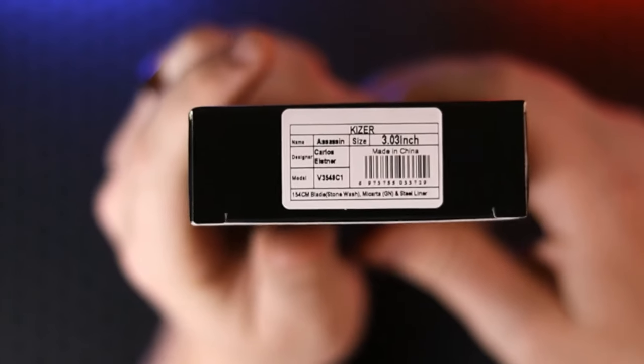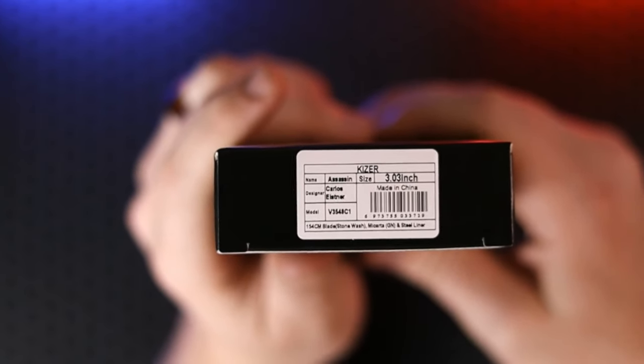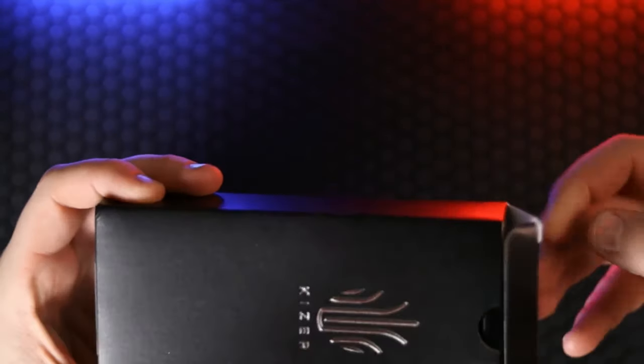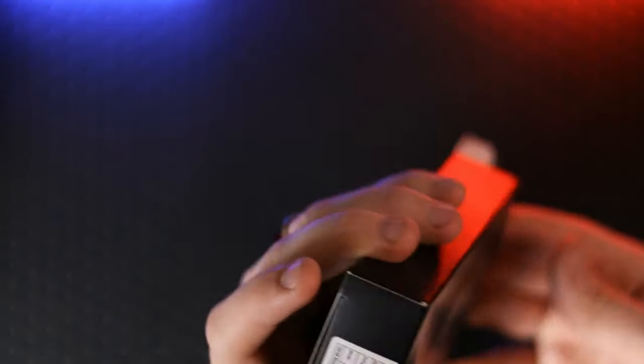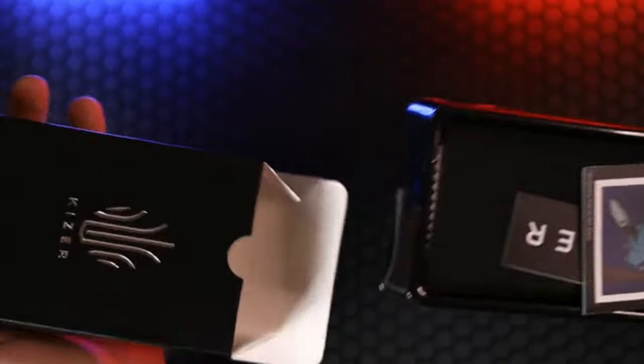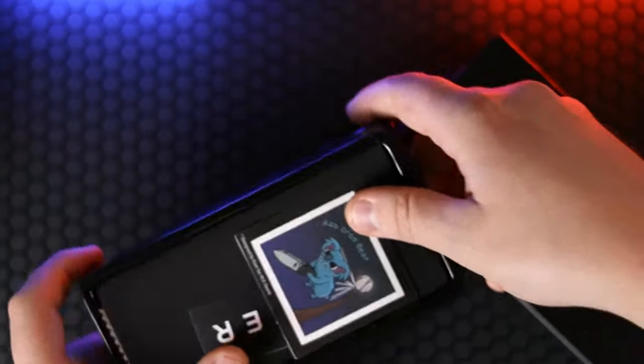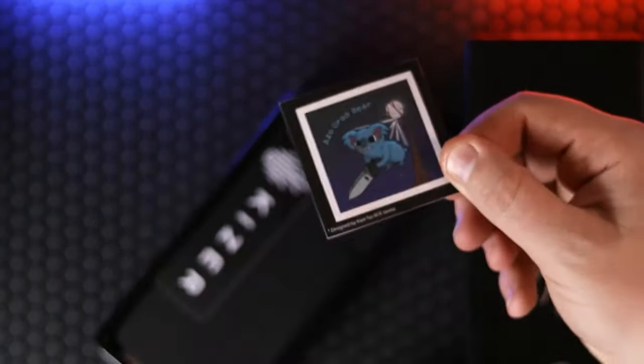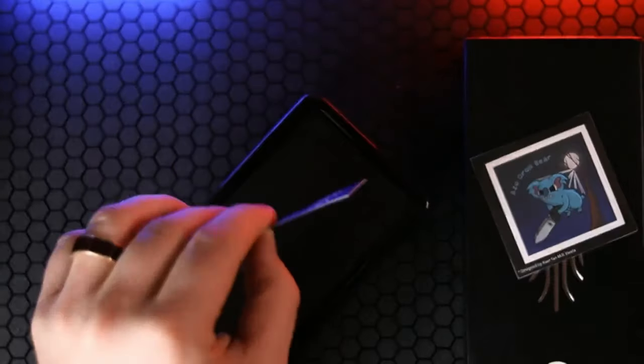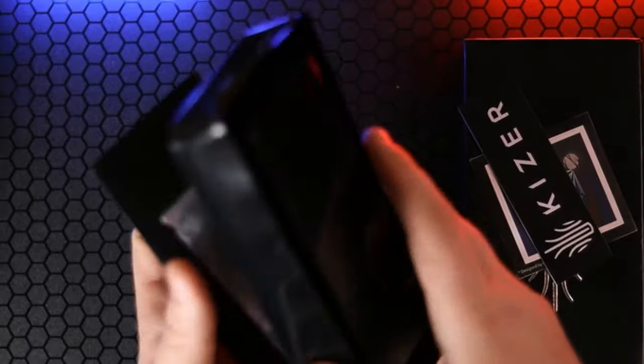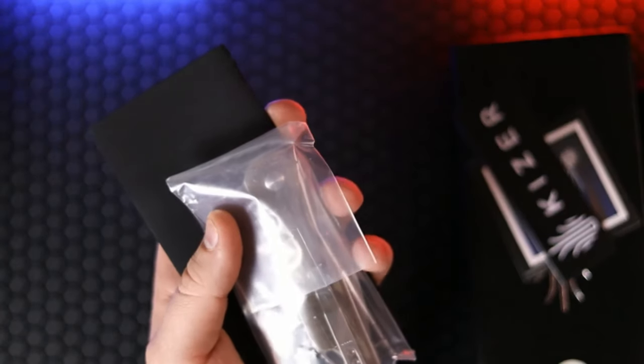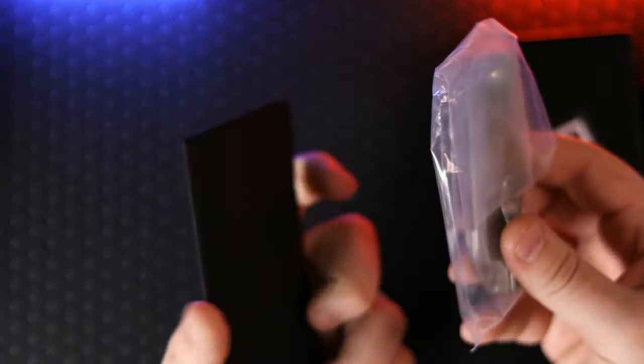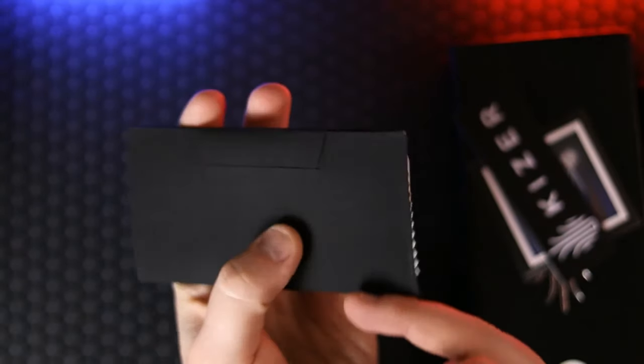This is going to be the Kaiser Assassin 3-inch. Never checked out an Assassin before, but there's a first time for everything. Shout out to Kaiser for sending this my way. Looks like we got a Drop Bear sticker in the package, that's nifty. A Kaiser sticker as well. If you don't know, I love stickers. It seems like sometimes my real hobby is actually collecting stickers.